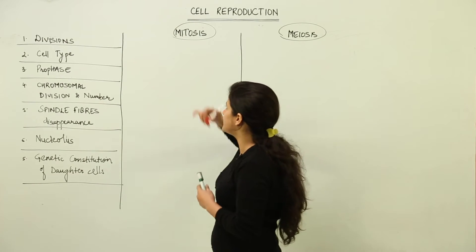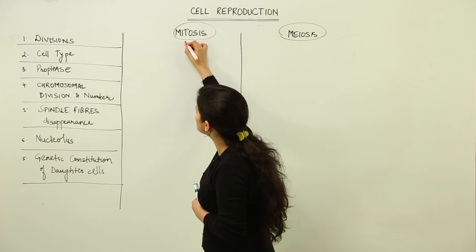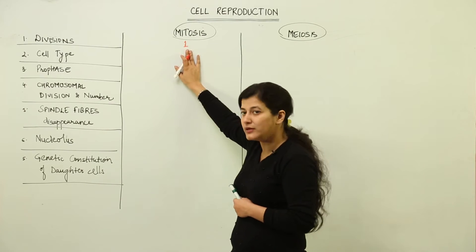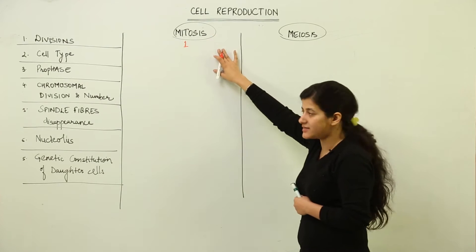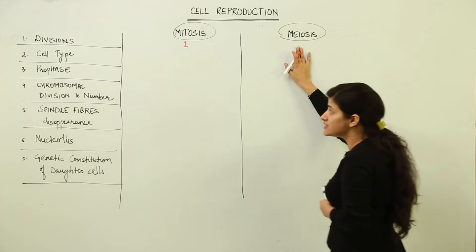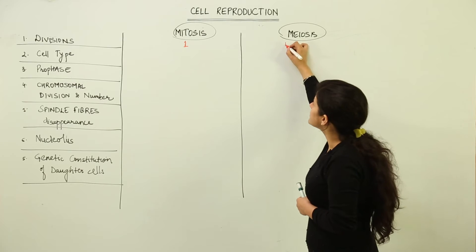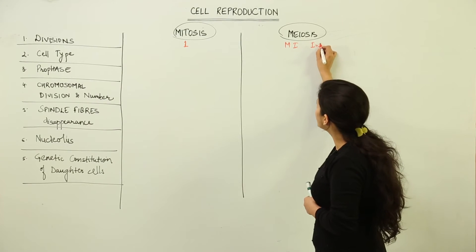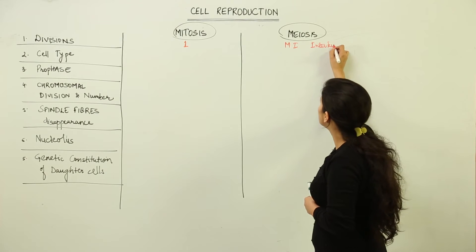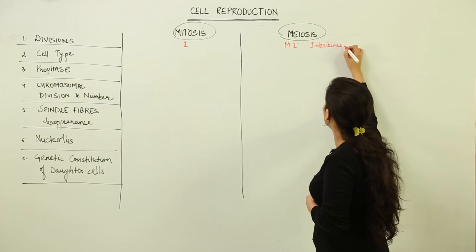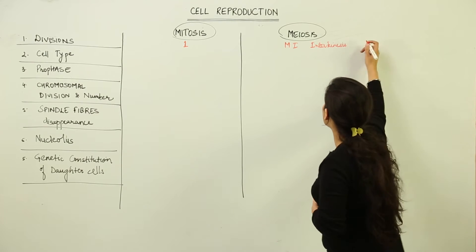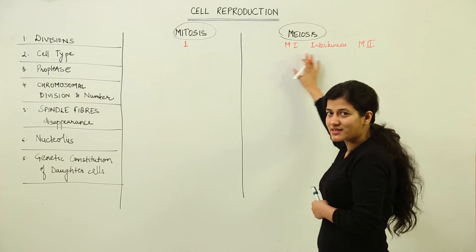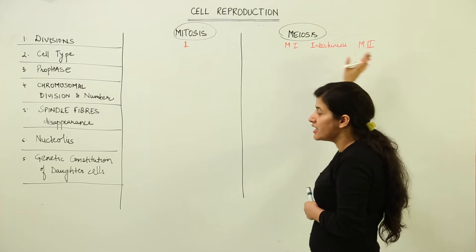In mitosis, one karyokinesis and one cytokinesis takes place, so the number of divisions in mitosis is one, and we get two daughter cells in the end. In meiosis, there is meiosis one, followed by interkinesis, and then meiosis two — so there are two successive divisions which take place.